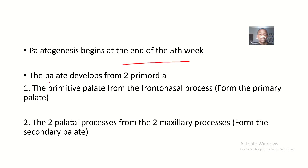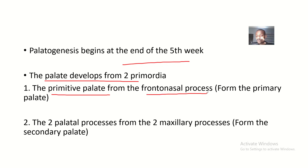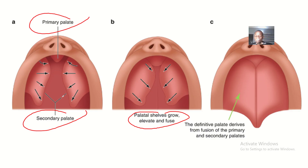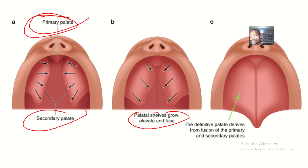The palate develops into two primordia, which include the primitive palate or the primary palate. The primitive palate, formed from the frontonasal process, forms the primary palate. This is the primary palate, and it's important to always note that it originates from the primitive palate.